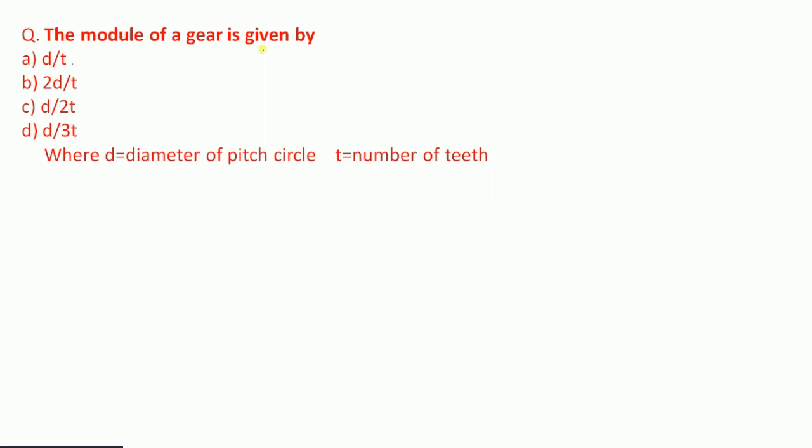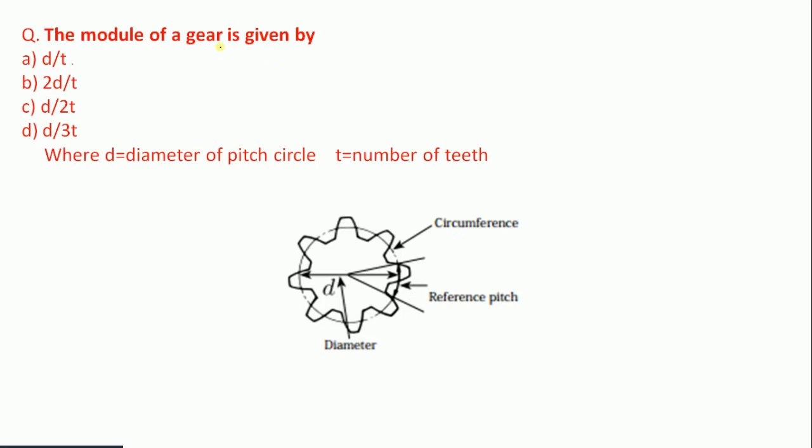Question 6: The module of a gear is given by — d/t, 2d/t, t/2t, or d/3t. The module of a gear is d/t — the diameter of the pitch circle divided by the number of teeth. Therefore option A is the correct answer.